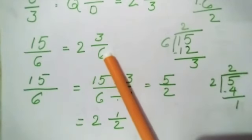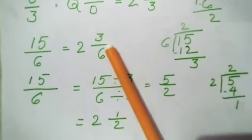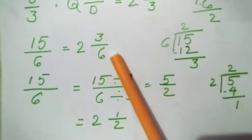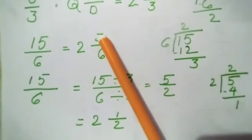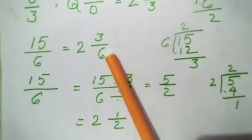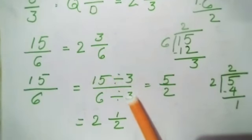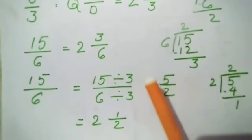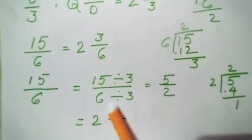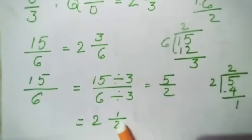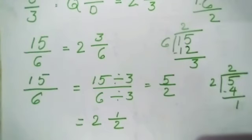This confirms that 3/6 simplified by dividing both by 3 gives 1/2. So 2 and 3/6 and 2 and 1/2 are equal. This is the method for converting an improper fraction into a mixed fraction.